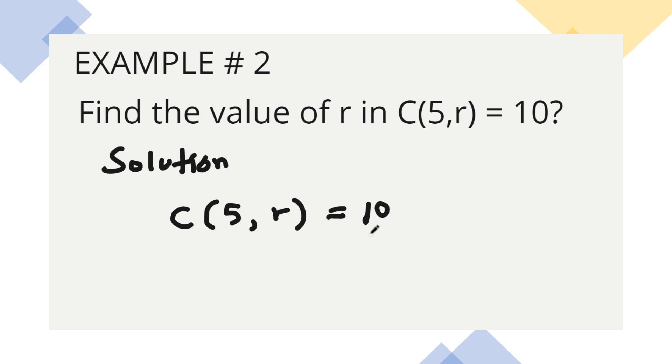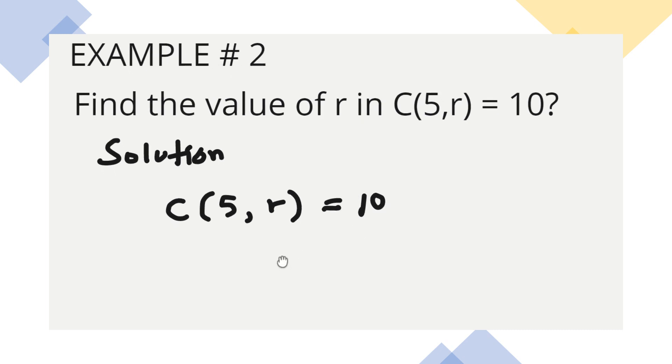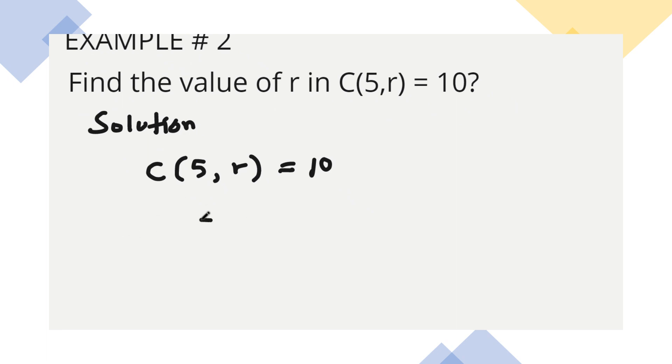We are solving this using the formula for combination. So ano ba yung formula ng combination? Isulat mo yun. So yung formula natin, that is 5 factorial over (5-R) factorial R factorial. Yan, ito yung formula nya. The formula is N factorial over (N-R) factorial R factorial. So kasi given natin is N which is 5, so isubstitute mo yung value ng N. Ilagay mo yung values nya sa formula ng combination, kasi C sya, formula to ng combination. Yan, isubstitute mo yung value.